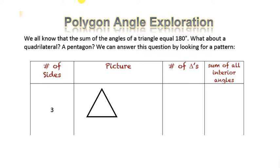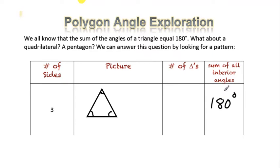We're learning about polygon angles. Specifically, we're going to start by looking at the number of degrees in all of the angles if you add them up on the inside — in other words, like how many degrees are in the interior angles of a triangle? We already know this. So we know if we add this angle to this angle to this angle, the total number of degrees in the triangle should be 180. So that's what this last column is here.